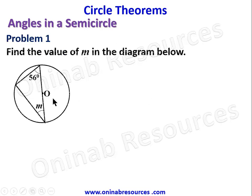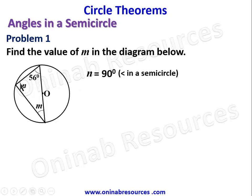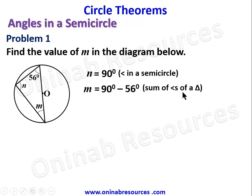Problem one: find the value of M in the diagram. We have angle M, and this is the center of the circle. This line is the diameter, therefore this angle — call it N — is equal to 90 degrees, that's angles in a semicircle. Since this is 90 degrees, 56 degrees and M are complementary angles. Therefore M equals 90 minus 56 degrees, which gives 34 degrees.